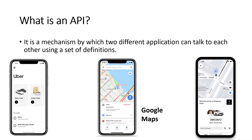What Google actually does is provide a programming interface. The developers at Google created many classes and methods — just like what I showed in the JavaScript video with class, objects, and methods. Google only shared those classes and methods with Uber, and that's called the programming interface. This programming interface of Google Maps shared with the Uber application is what Application Programming Interface stands for.